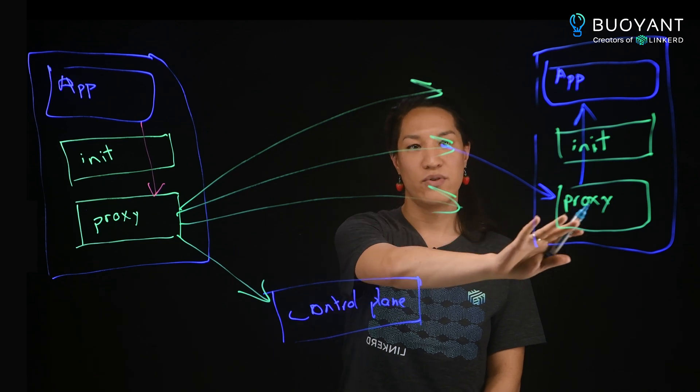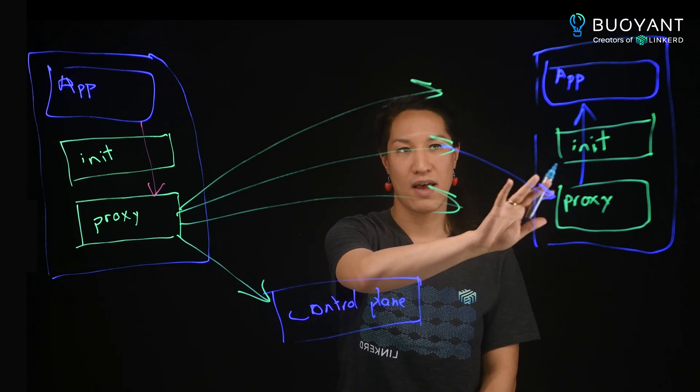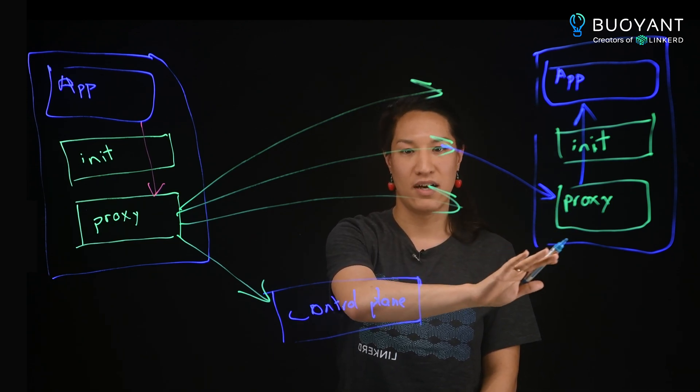The proxy will do things like terminate mTLS, add observability metrics, and other things like that.